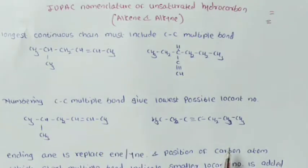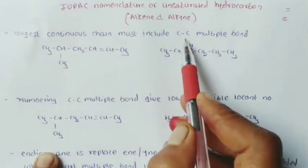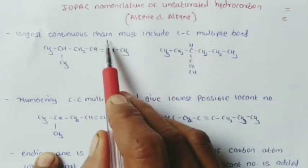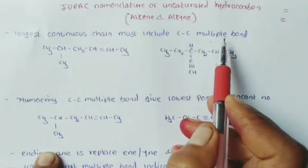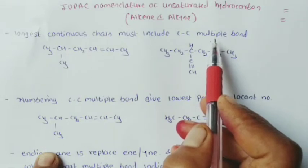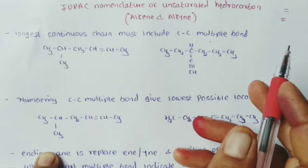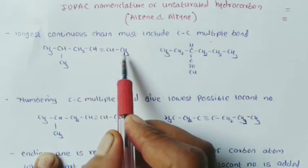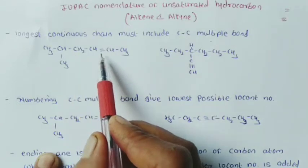Let us see the rules of IUPAC nomenclature. The first rule: select the longest continued chain of carbon atoms, and this chain must include the carbon-carbon multiple bond. For example, CH3-CH=CH-CH3 with CH2-CH=CH-CH3 — the longest continued chain which includes the carbon-carbon double bond is selected.